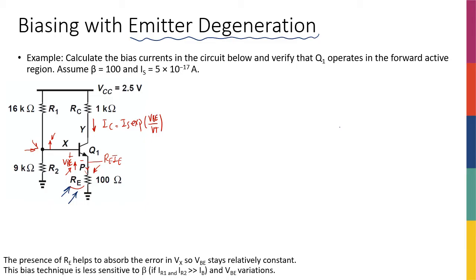Let's actually see this in action in an example. Here we have the circuit, and the question is asking us to find the bias current for the circuit, to find the IC, and also check if the circuit is operating in the forward active region. Beta and IS are given. I'm going to neglect IB as always, and you can later check if my IB was indeed negligible.